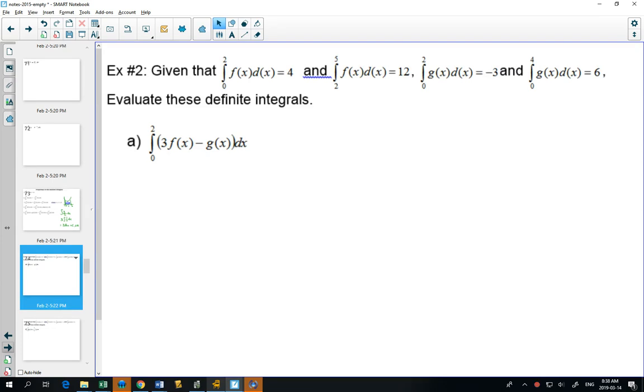that see if we can figure out the properties. So in this question, we're given a bunch of information. The area under the curve of f of x from 0 to 2 is 4. The area under the curve from 2 to 5 is 12. On g of x, it's negative 3 from 0 to 3. And 6 from 0 to 4.